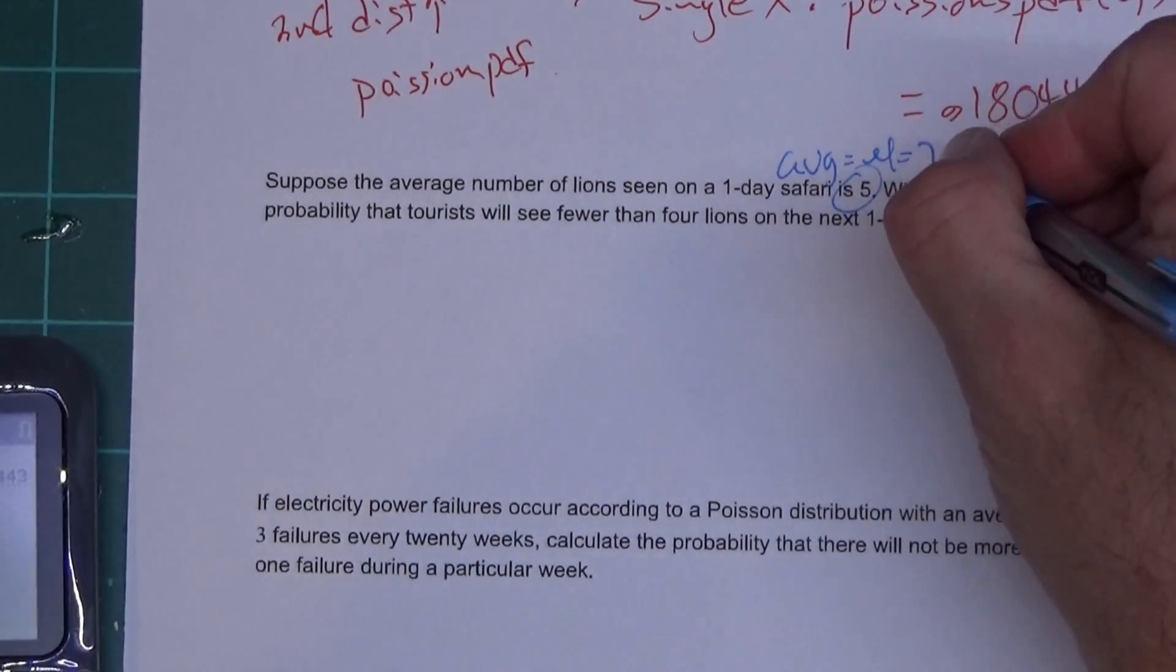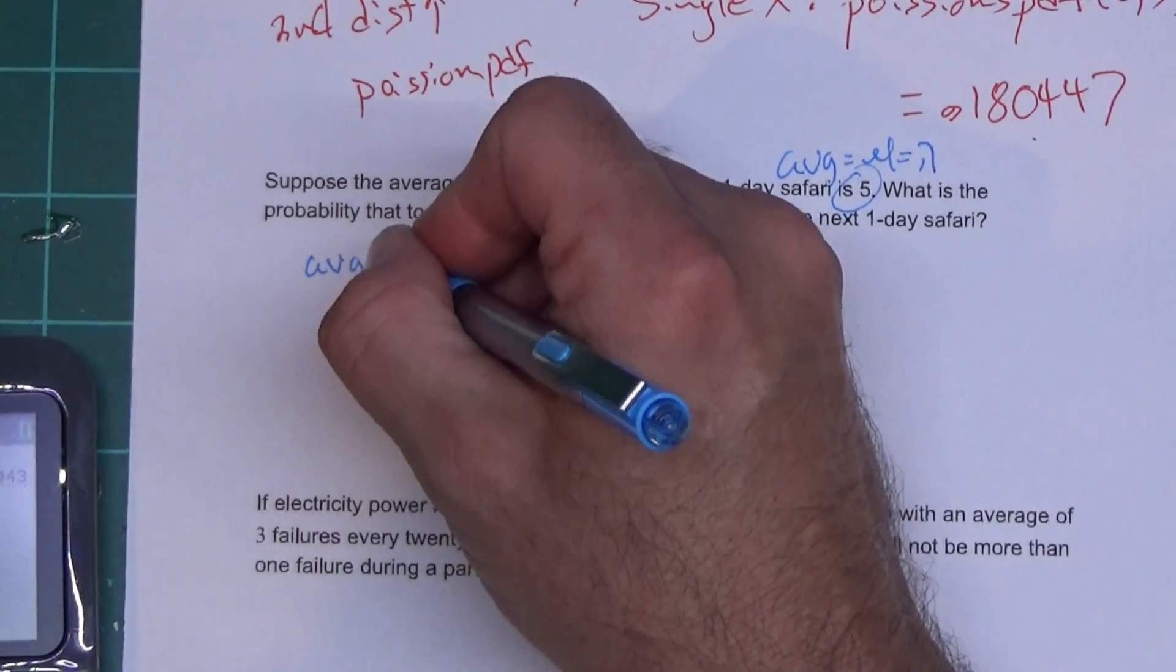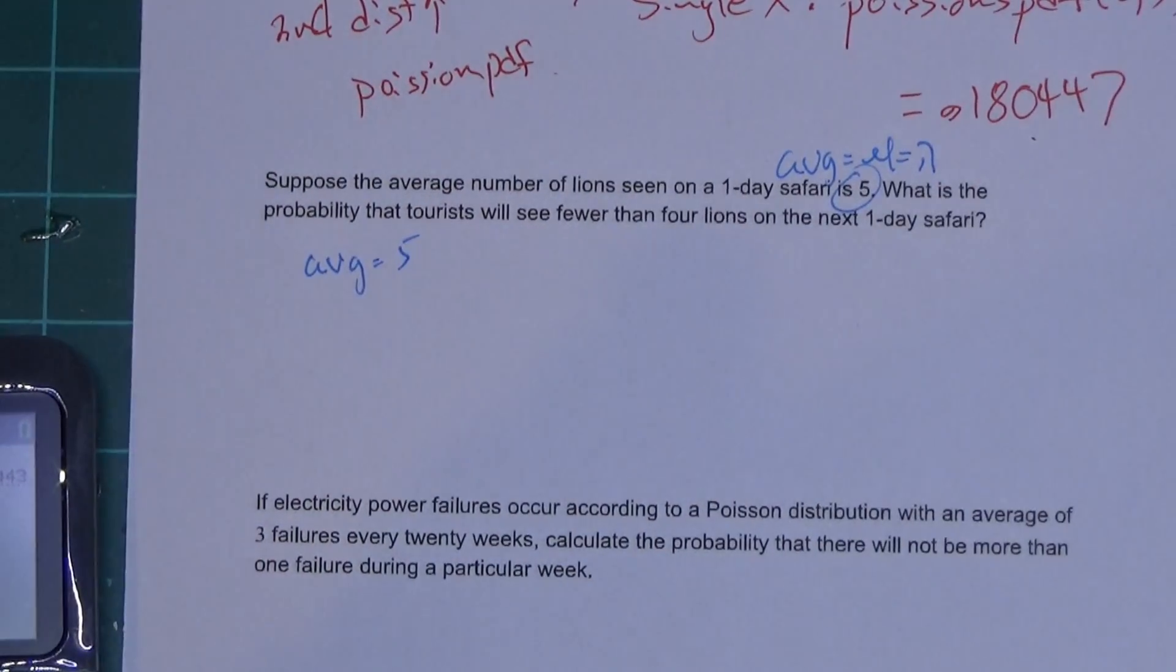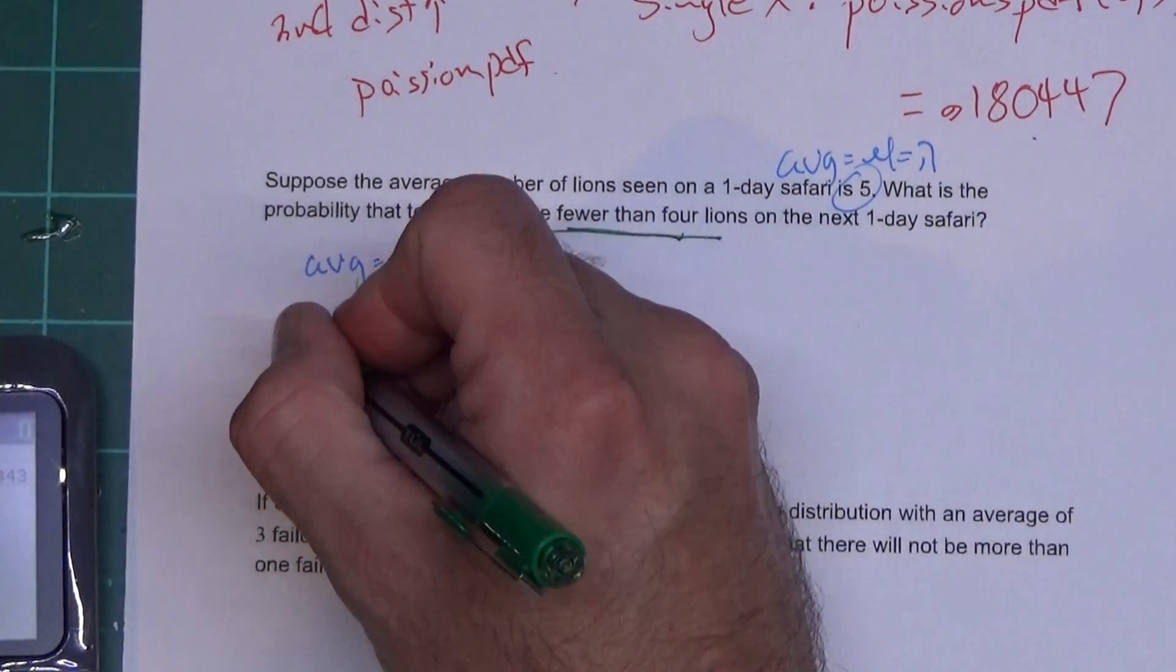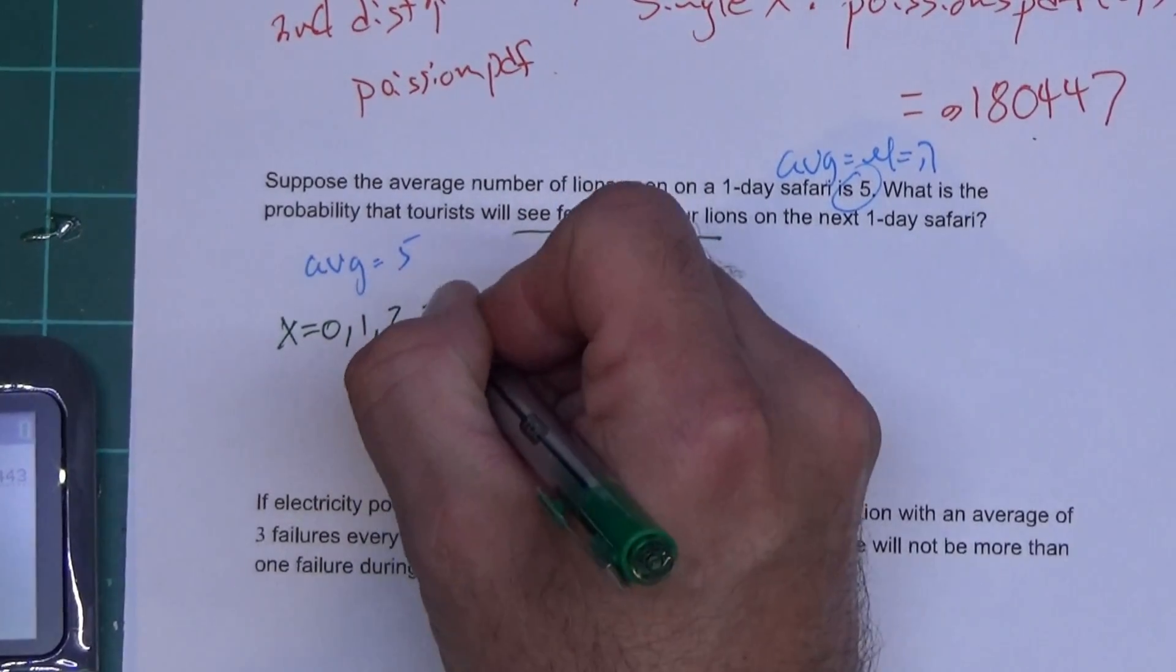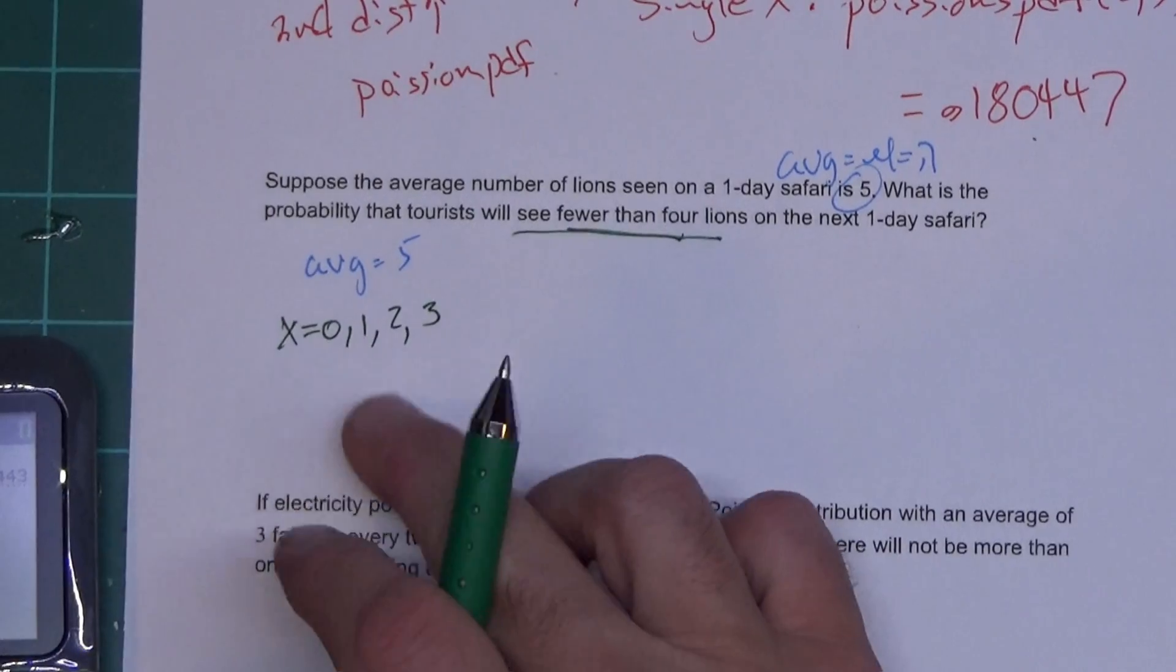So again it tells me my average is five, which is mu on this calculator. Some of the 84s have it as lambda, so don't be confused. My average equals five, and they want to see fewer than four. Now this is going to be a little bit different. That means X is going to be zero, one, two, and three. Fewer than four doesn't include the four, so I wouldn't count the four.